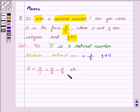And we can see that the denominators, that is Q, are not equal to zero. So it is a rational number.